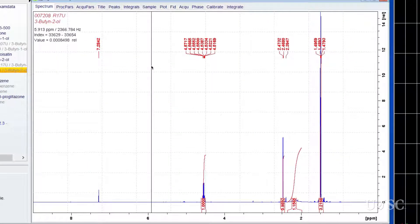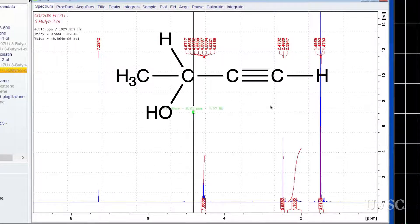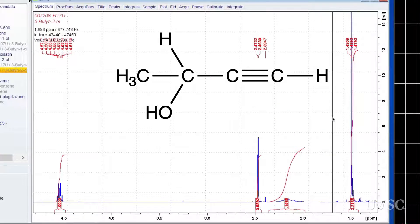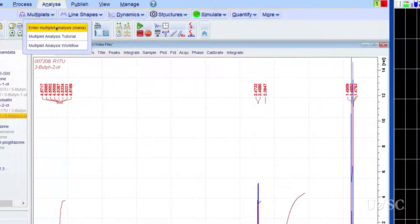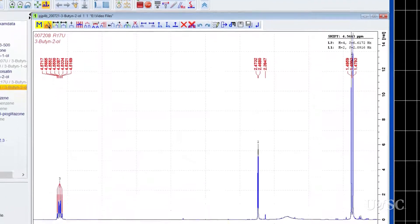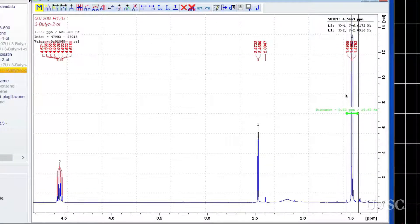The next example is a spectrum of 3-butyne-2-ol. Excluding the OH, this molecule has 3 resonances and due to the triple bond the alkyne proton couples the methine proton. Let's start the multiplet analysis tool and then automatically define the multiplets with the first button. Trees are generated for the 3 multiplets in the spectrum. Let's take a close look at each.